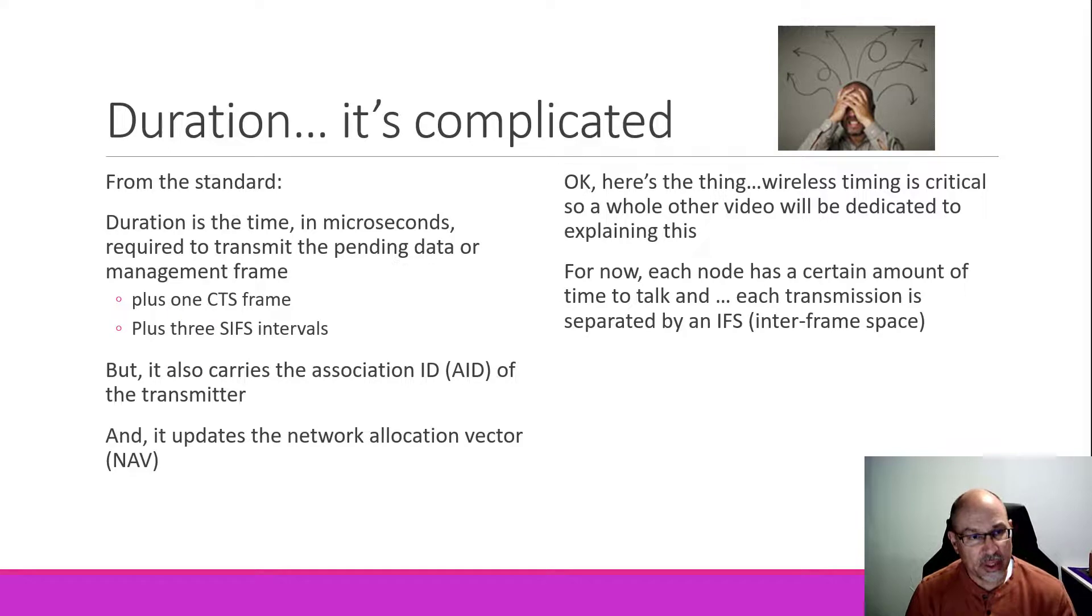So the duration. The duration, well, it's complicated. From the standard, there is a definition of duration, and it seems pretty straightforward. Duration is the time in microseconds required to transmit the pending data or management frame, plus one CTS frame, plus three SIFs, or short interframe space intervals. See, all of a sudden it got complicated there real quick, didn't it? But this value, this number, also carries the association ID, or the AID, of the transmitter. So there's a certain number of bits that are assigned for the duration. Part of them are the AID. Part of them is the time for transmit. But this value is also used to update the network allocation vector.